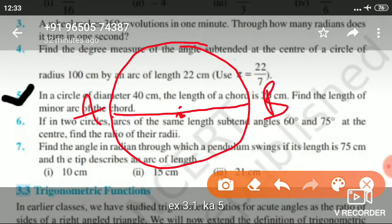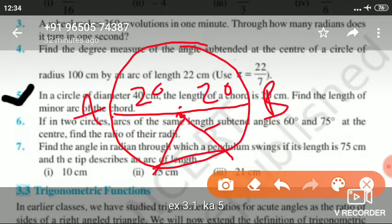Now you have to find the length of the minor arc. The chord is 20 centimeters. Let me join this, so this will be 20. Since the diameter is 40, the radius will be 20. This will also be 20, this is also 20, so it will be an equilateral triangle making an angle of 60 degrees.